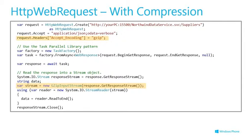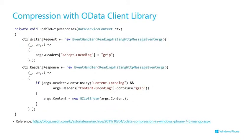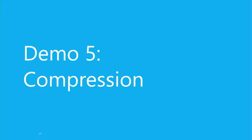For doing compression with HttpWebRequest: set the Accept-Encoding header to gzip, then when the response stream comes down open a GZipInputStream and that will unzip it for you. For the OData client library — LINQ to URI approach — you can add event handlers for SendingRequest and ReadingResponse, hook into those streams, add the Accept-Encoding header on the way out, and use the GZip stream to unzip the response on the way back.